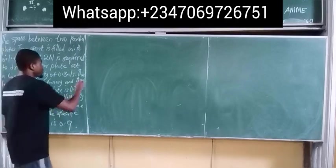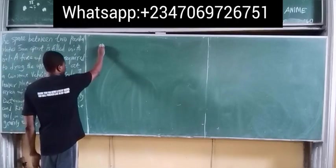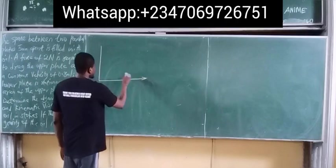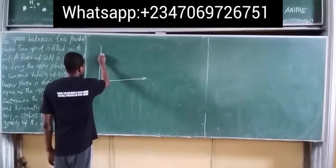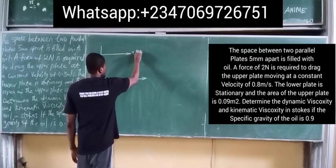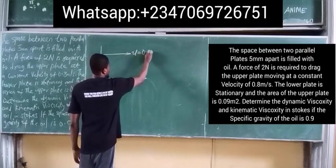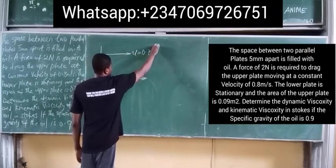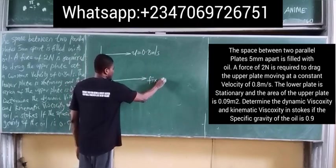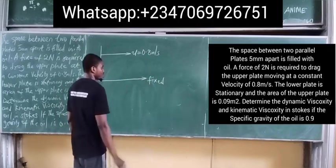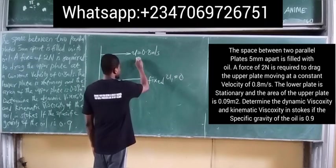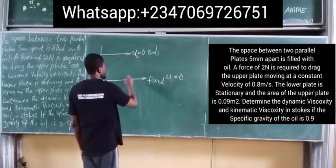Let's get a mental picture of what the question is saying. We have two parallel plates — one is fixed and one is moving with a velocity u equal to 0.8 meters per second. The lower plate is stationary, meaning u1 is simply equal to zero.